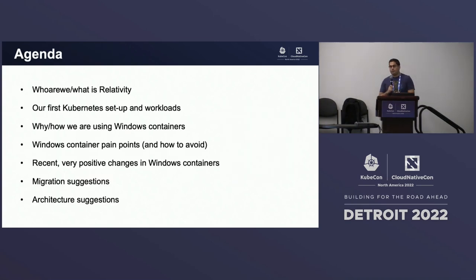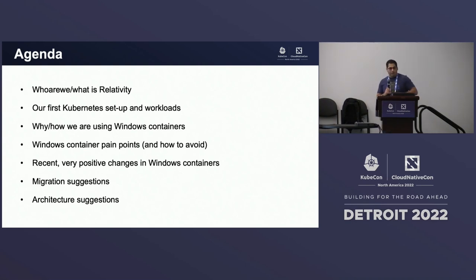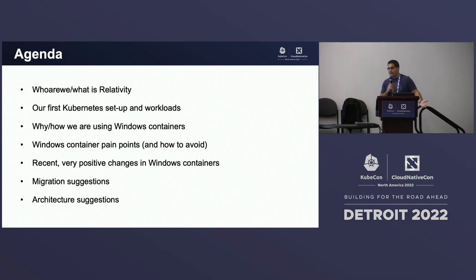Here's what we're going to go through: first, who we are, what our team is, and what Relativity is. Then a quick understanding of what our first Kubernetes setup was, why we started using Windows containers — since it wasn't a super common way to go two years ago. Then Windows container pain points we ran into and how you can avoid those. And some recent very positive changes, literally this morning, for Windows containers that you'll probably be excited about.